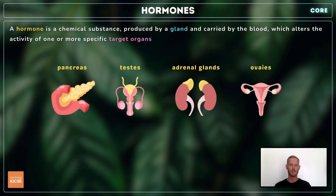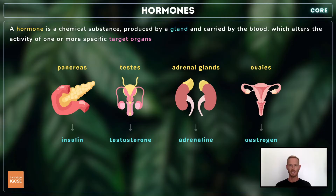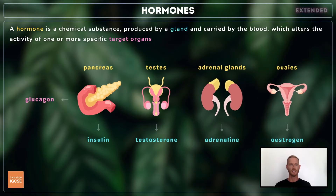You need to know about four specific endocrine glands and the hormones they secrete. The pancreas secretes a hormone called insulin, which helps to regulate blood sugar. The ovaries secrete the female sex hormone, estrogen. The testes produce the male sex hormone, testosterone. And the adrenal glands, located at the top of the kidneys, release adrenaline. For extended, you also need to know that the pancreas secretes an additional hormone called glucagon.